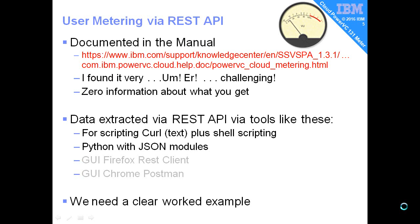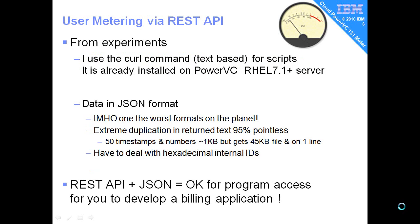What we need, really, rather than a fairly terse manual page, is a worked example of how to get the data out in a sensible format to produce a spreadsheet. So for my experiments, we're going to use the curl command. That is already installed on the PowerVC host, the server itself, which is running Red Hat Enterprise Linux 7.1 or above.